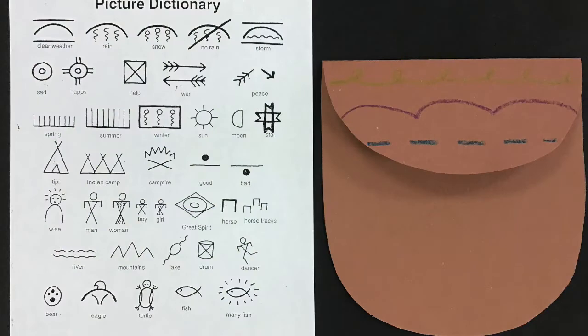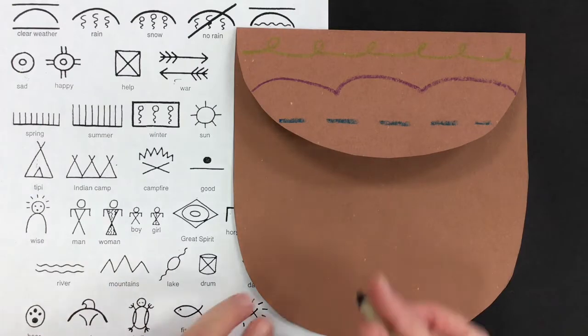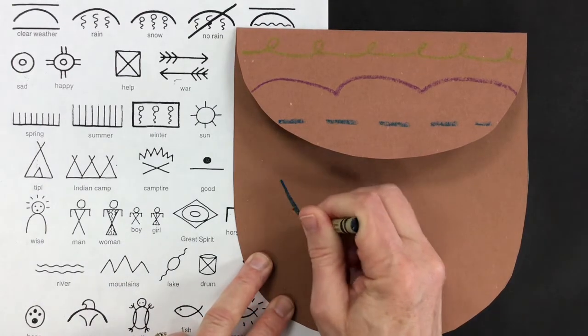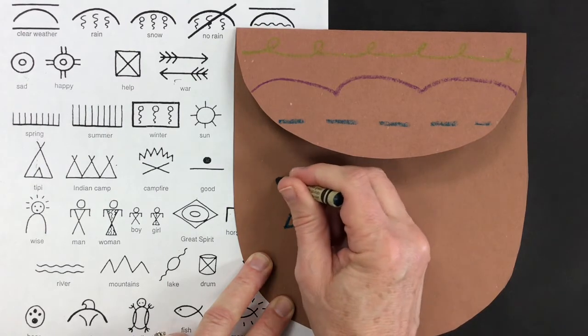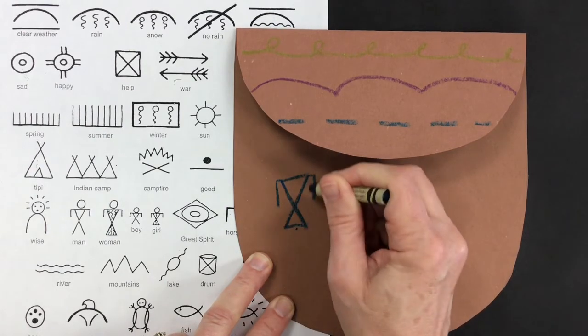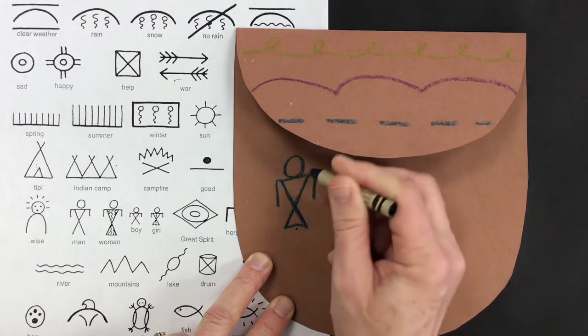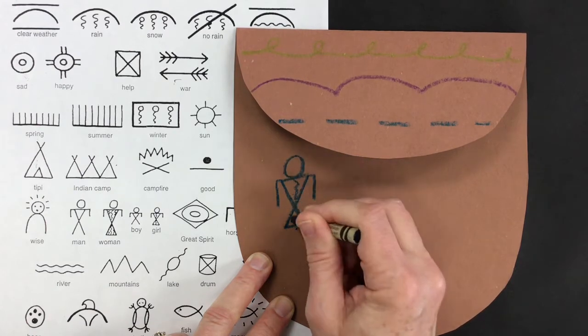Now we're gonna look at some pictures that sometimes Native Americans use when they were telling stories. So I'm gonna draw first a girl. I looked at my picture page and I'm making the same design that's on the picture page for the symbol for girl.